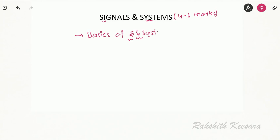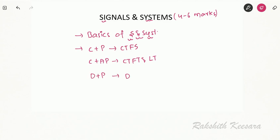We will cover the properties of signals and properties of systems. After this, if a signal is continuous and periodic we will look into Continuous Time Fourier Series (CTFS). If a signal is continuous and aperiodic we will look into Continuous Time Fourier Transform (CTFT) and Laplace Transform. If a signal is discrete and periodic we will look into Discrete Time Fourier Series, and if discrete and aperiodic we cover DTFT and Z-transform.